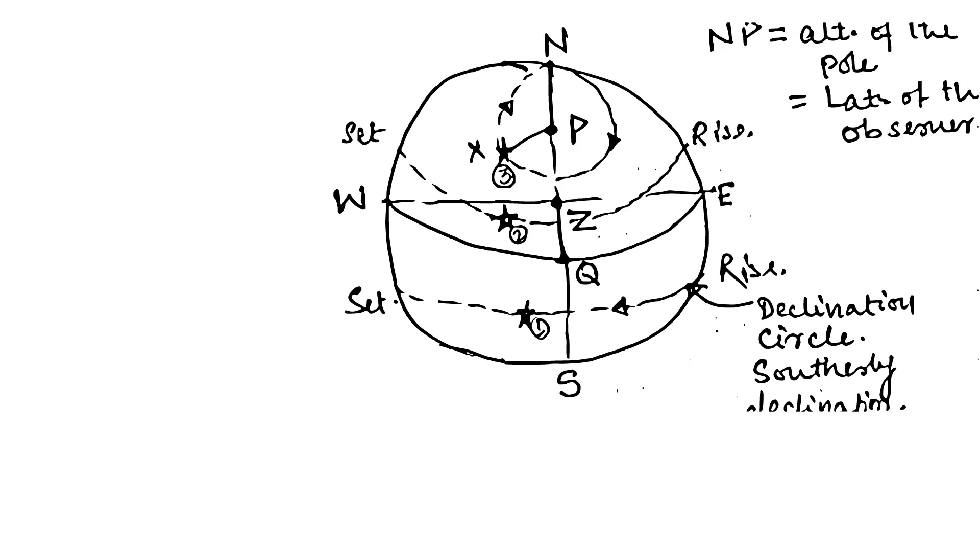Here in this picture we have three celestial bodies: 1, 2, and 3. Body number 1 and 2 are not circumpolar because they set, and body number 3 is circumpolar.